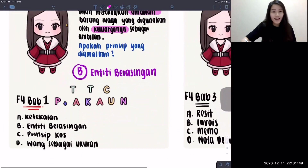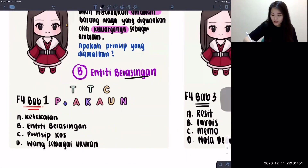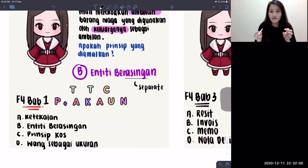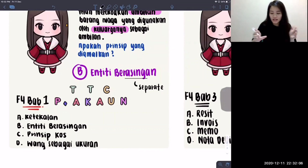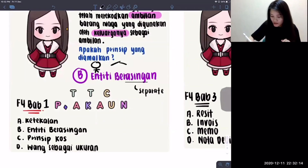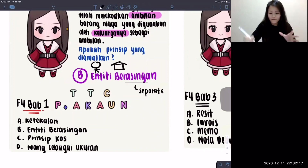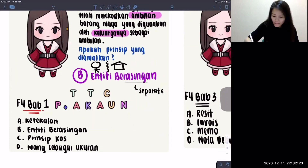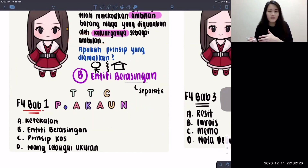The answer is entity perasingan. Do you see the word 'asing'? Asing means separate. Now the word entity means two different persons or two different things. So if we talk about Encik Zain, he is one entity, and the perniagaan is another entity — they are considered different things. So we should separate them. That's why when Encik Zain recorded it sebagai ambilan and not sebagai belanja, it already follows the entity perasingan concept.